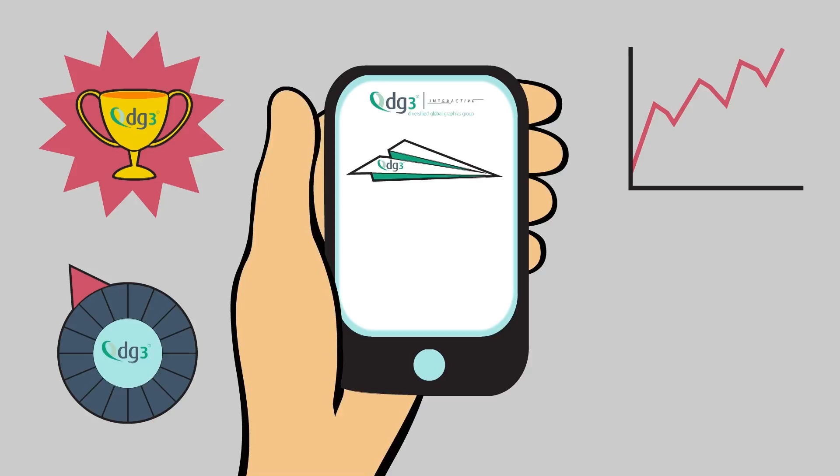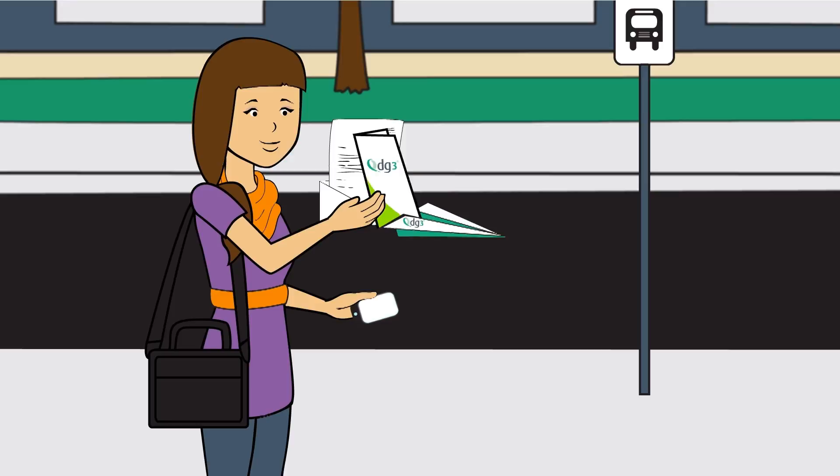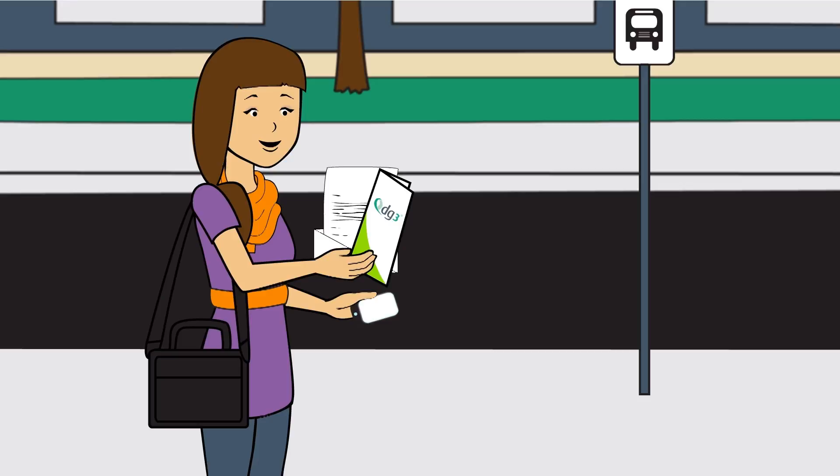DG3 uses this data to answer customer inquiries via personalized email. A personal letter and brochure fulfill customer requests for more information. DG3 has variable data and print-on-demand capabilities to make this happen seamlessly.